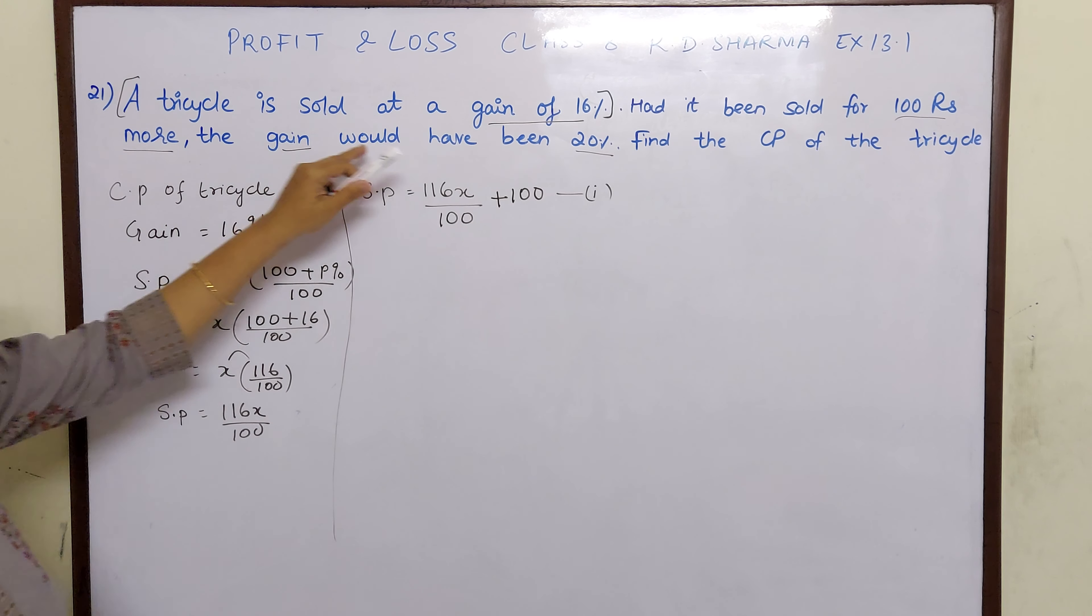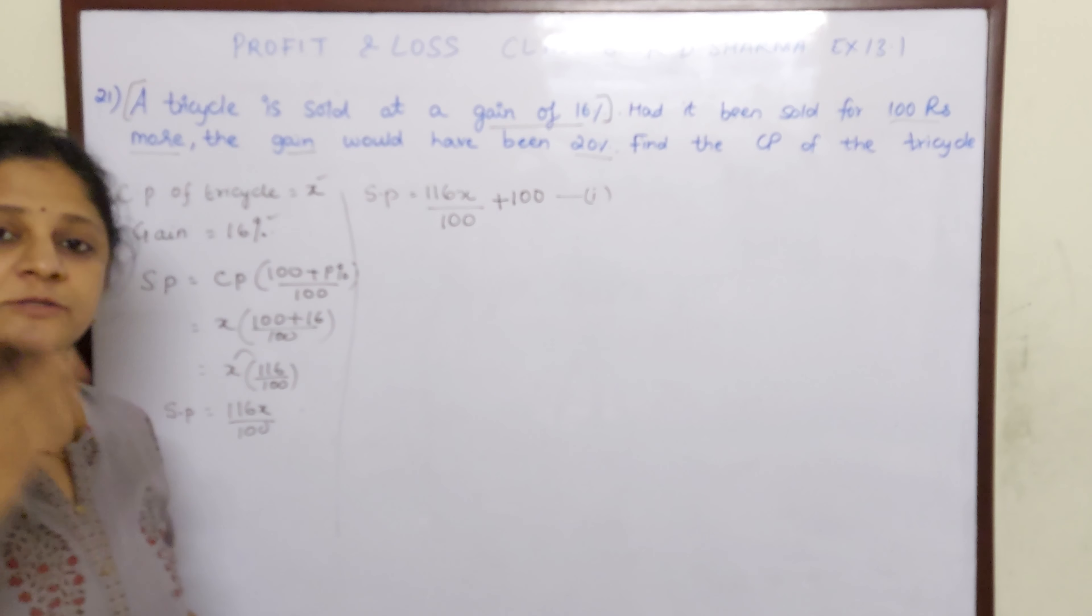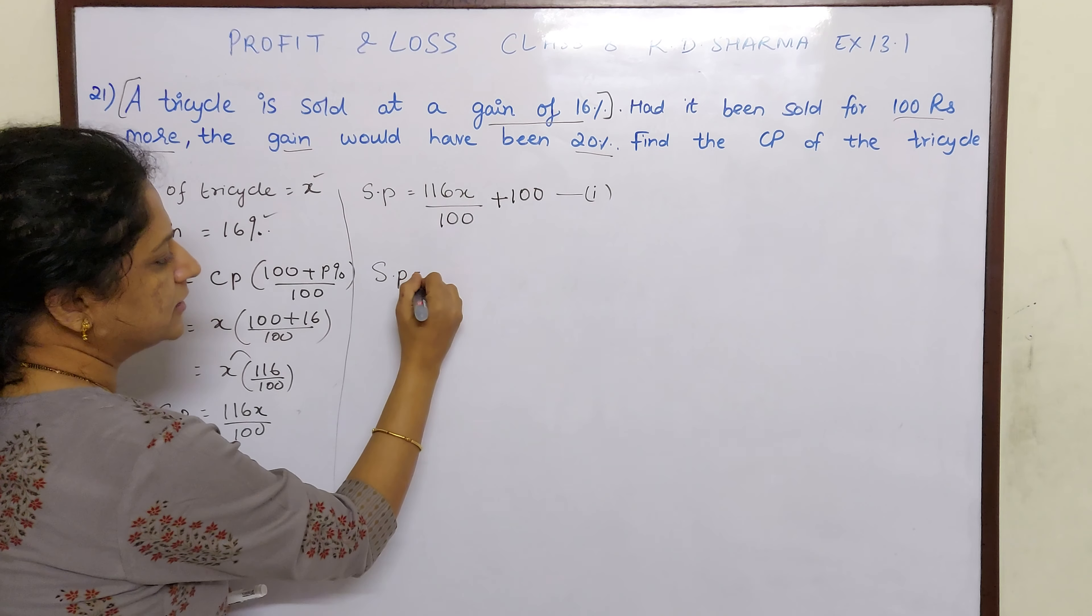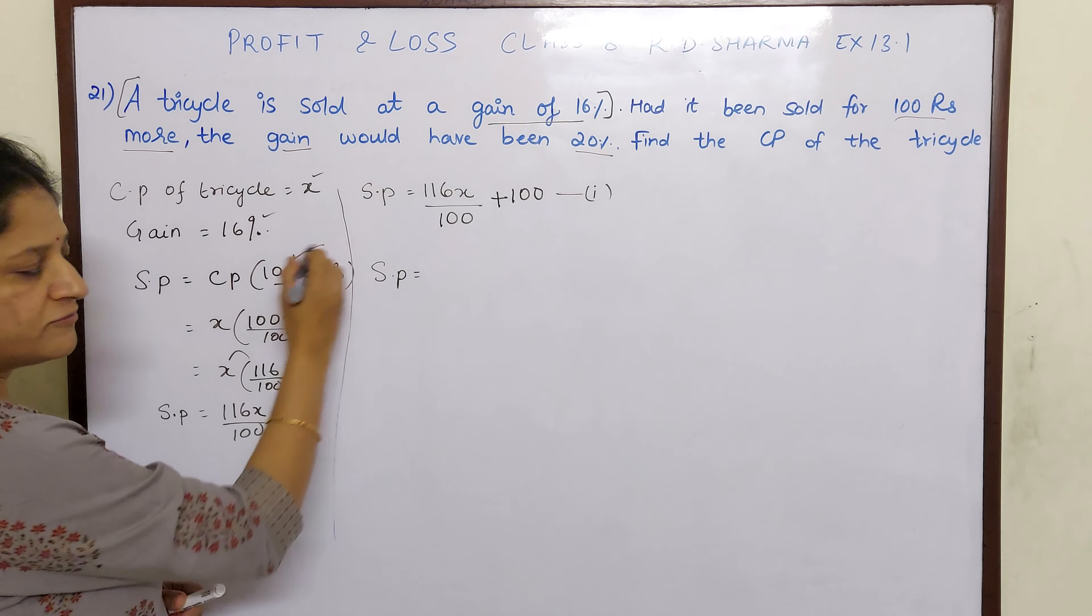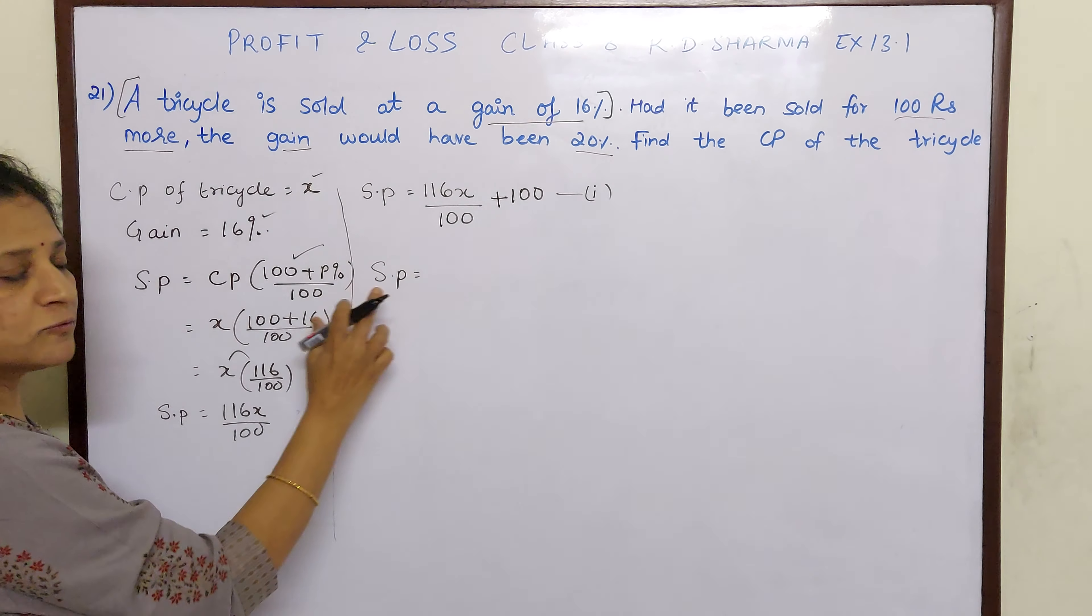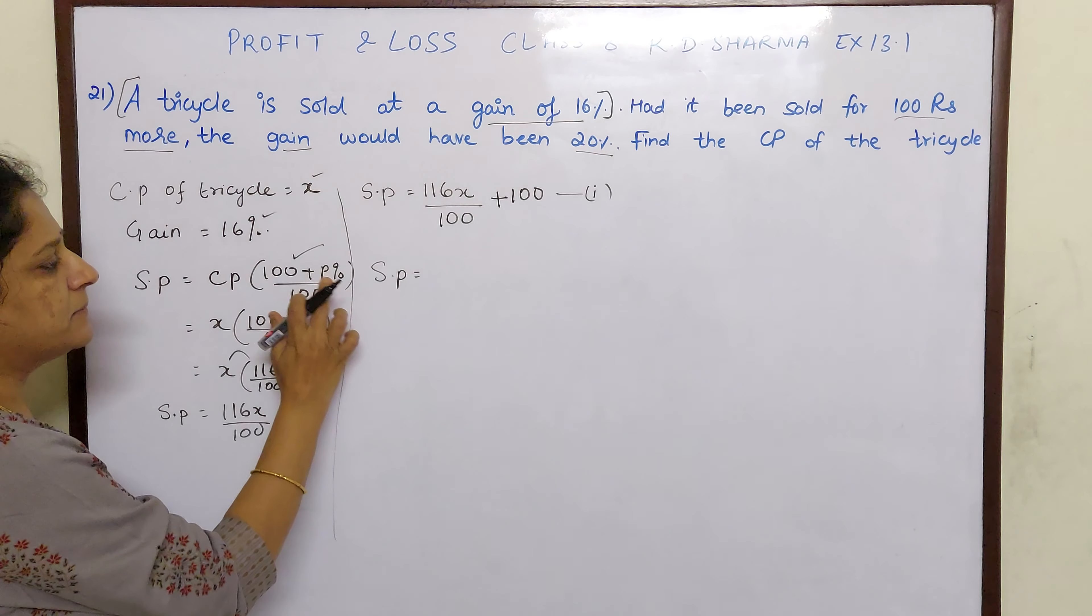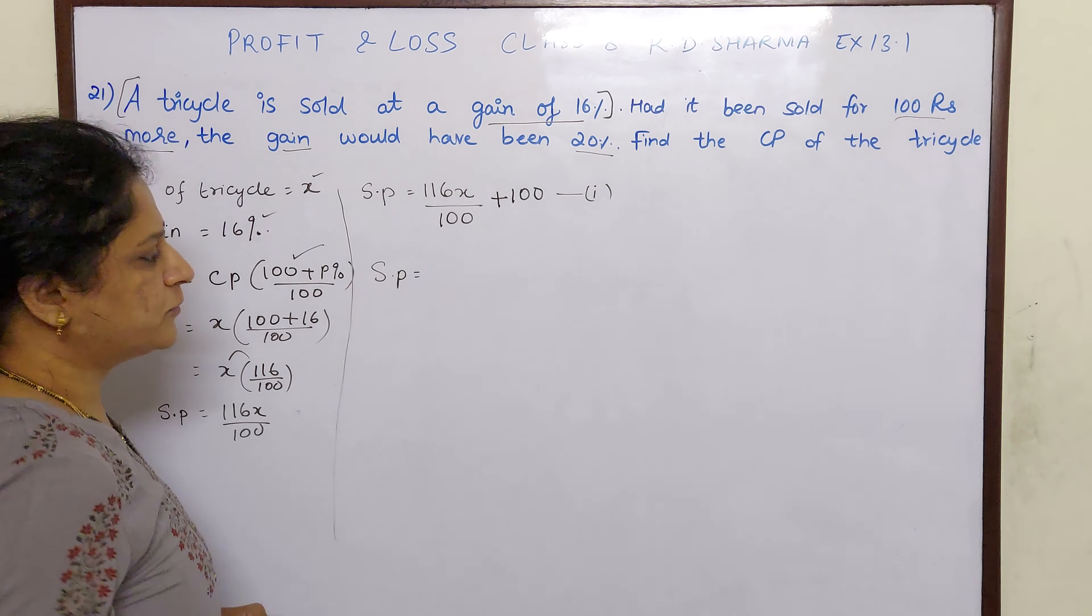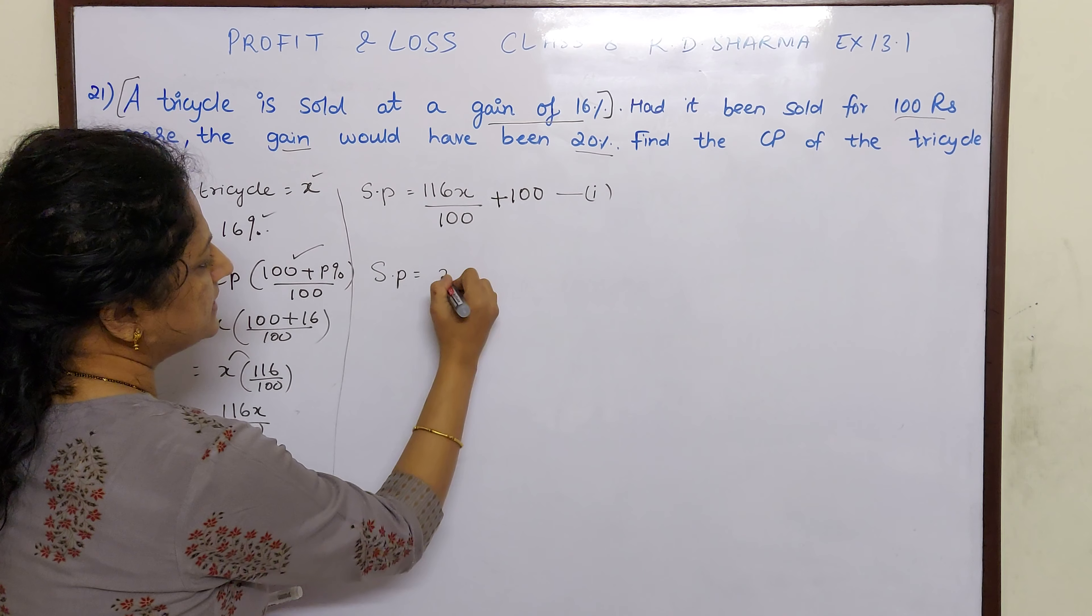What would have been the scenario? The gain would have been 20%. So the gain would have been different. That means we have to calculate the new gain. So now same formula we will do to find out what would be the new selling price. But here instead of 16, we will take the new profit percent.